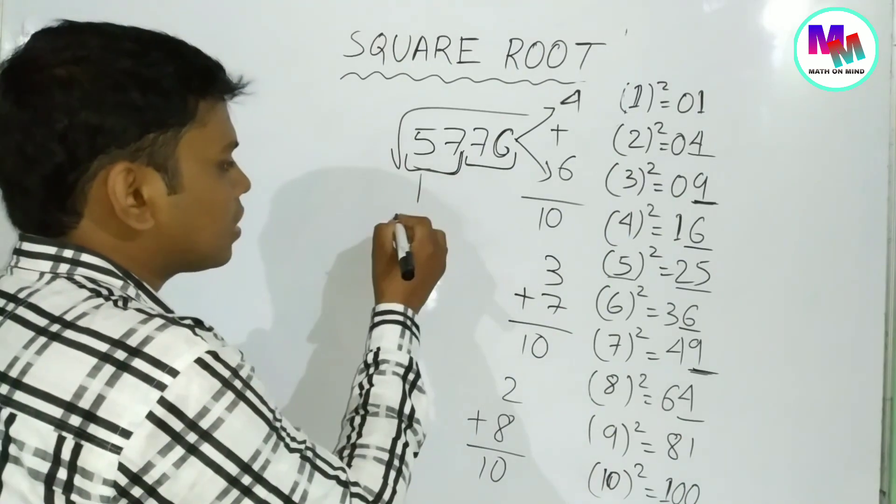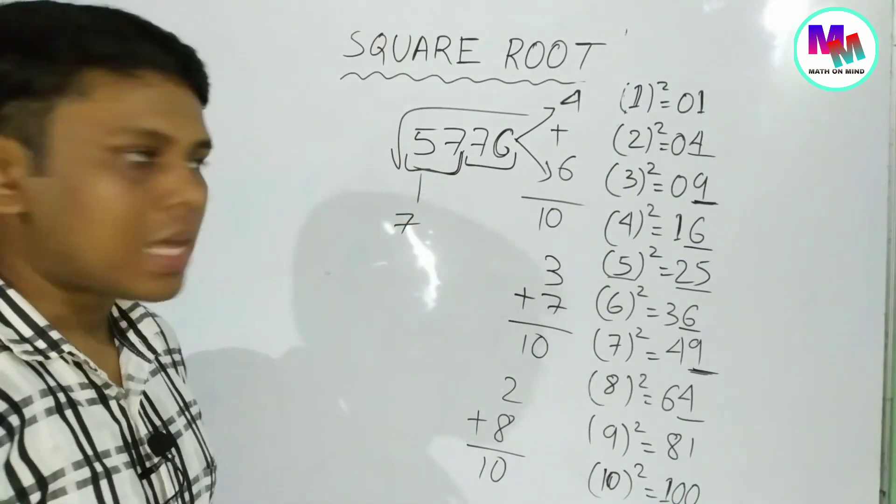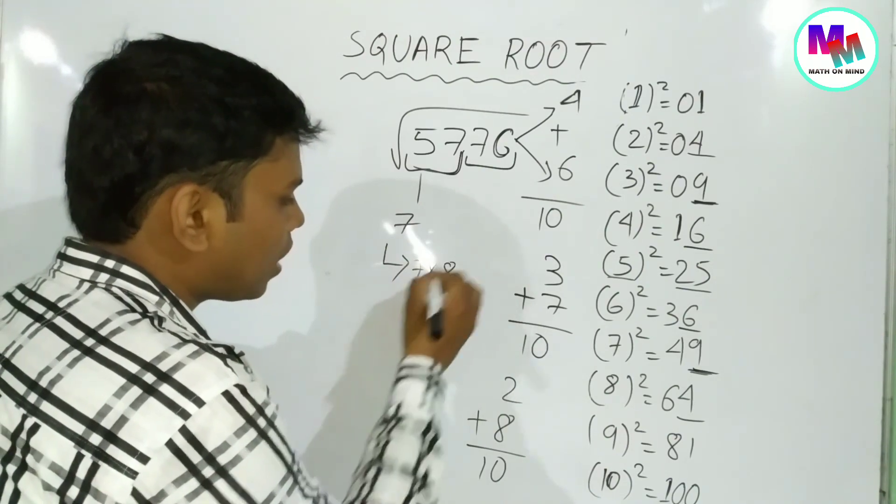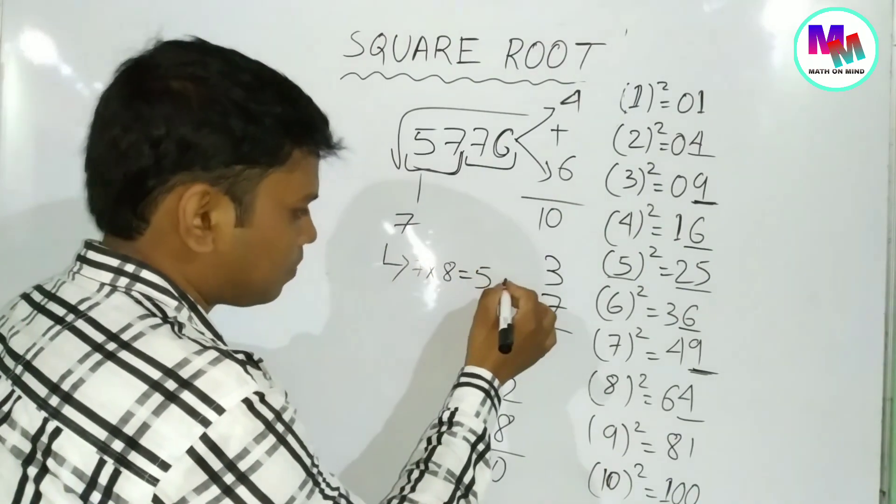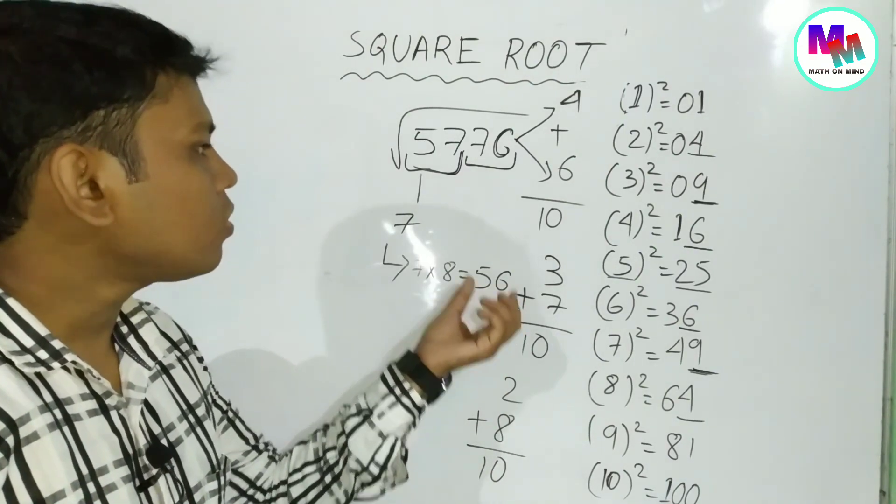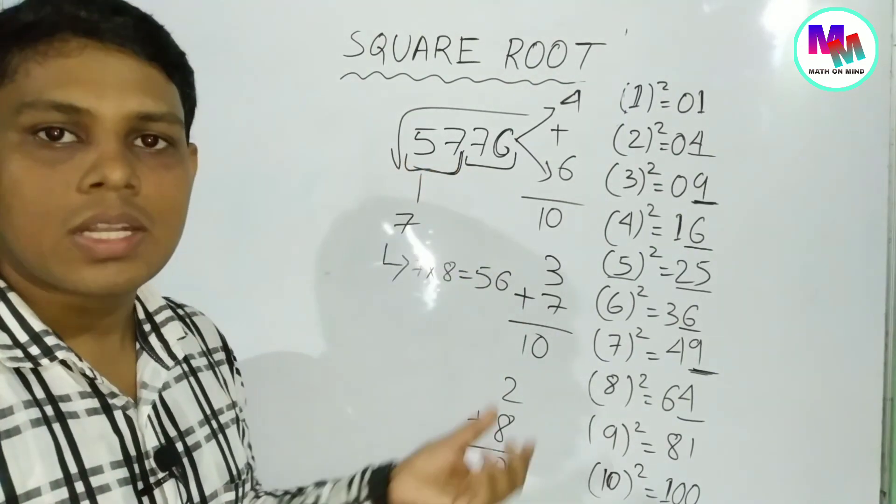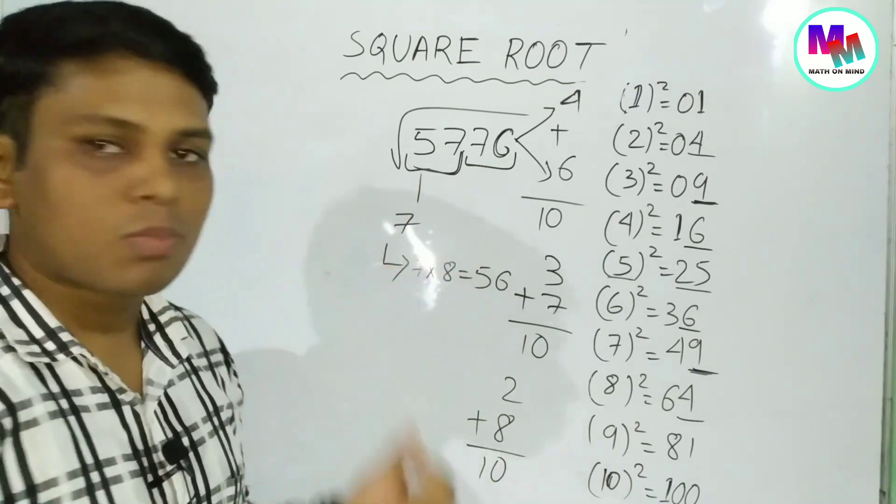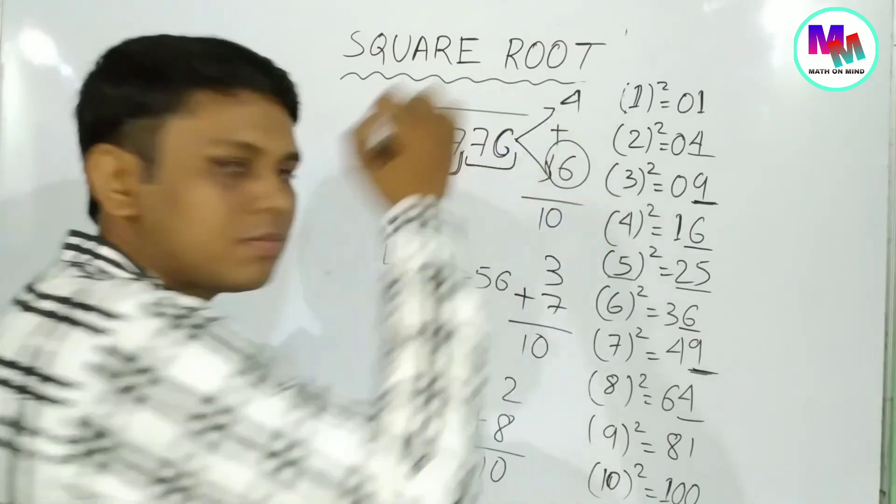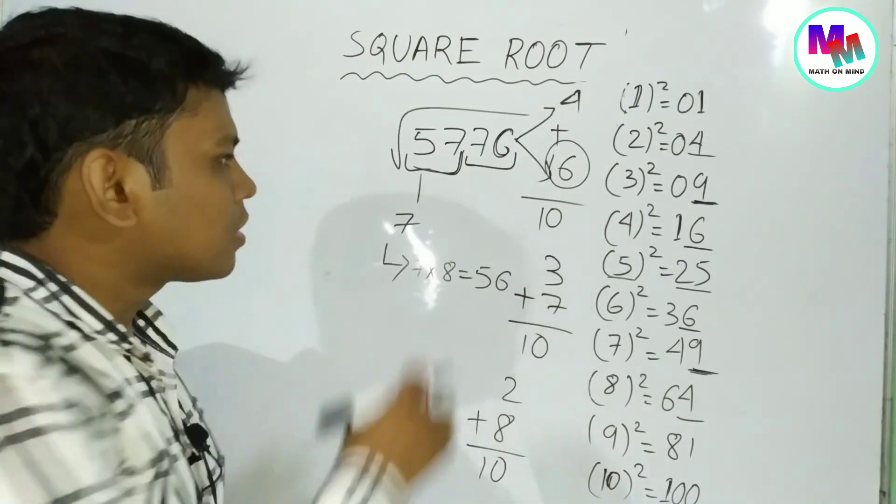Following this method, we can solve it. We take the pairs, work through the calculation step by step, and arrive at the answer. This is how we approach the problem.